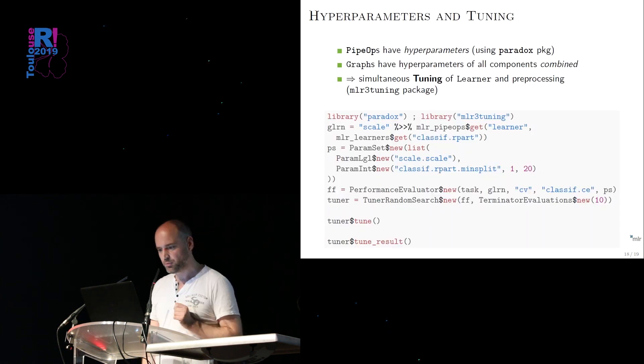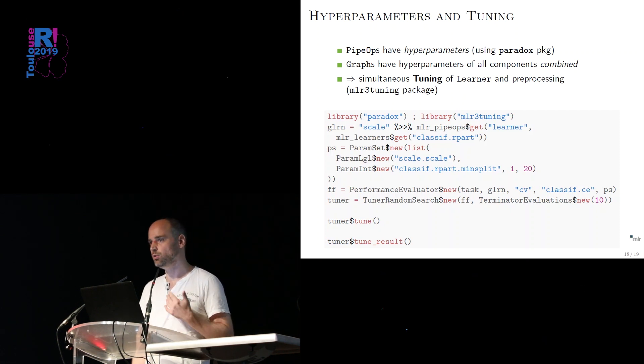I have also a slide on parameter tuning. I guess I will skip that, because Michael has already shown that. And it doesn't work any different to what you do in normal tuning MLR3. You specify your parameter set. You run your tuner on this, in this case, random search. Stuff like Bayesian optimization and hyperband will follow very soon. We do lots of research on this too. And we have packages for that available for the old MLR2 version and will now transform them also for MLR3.